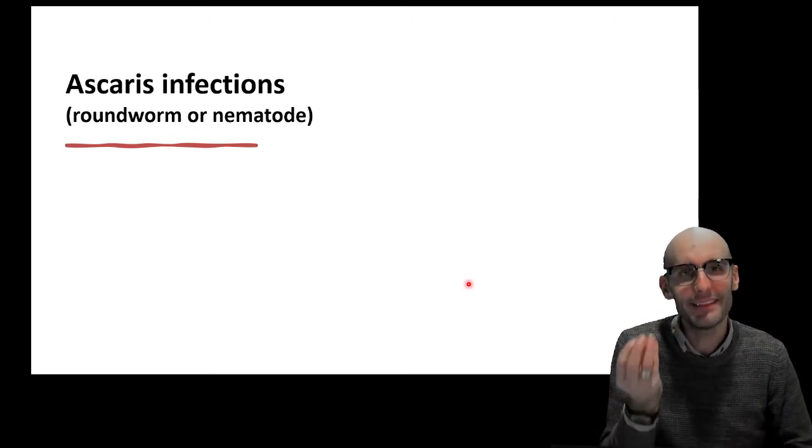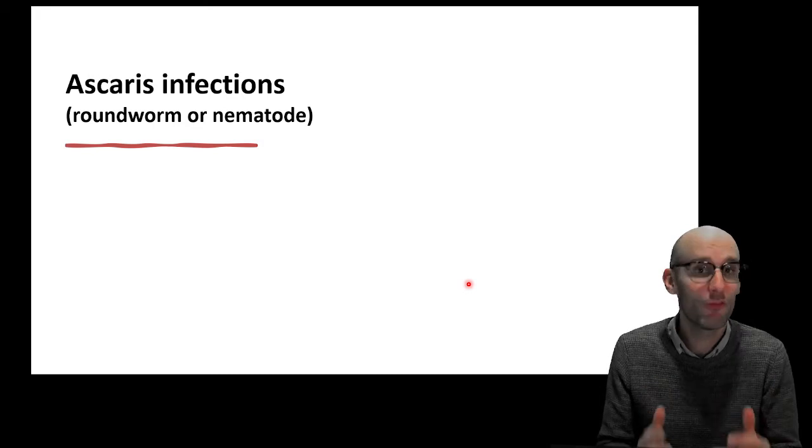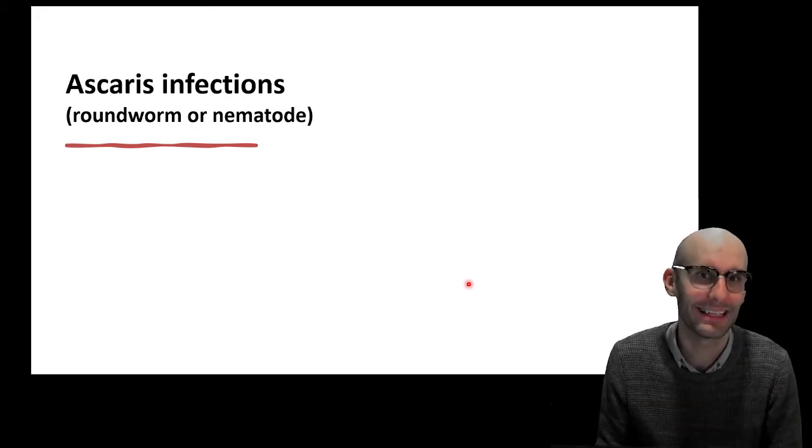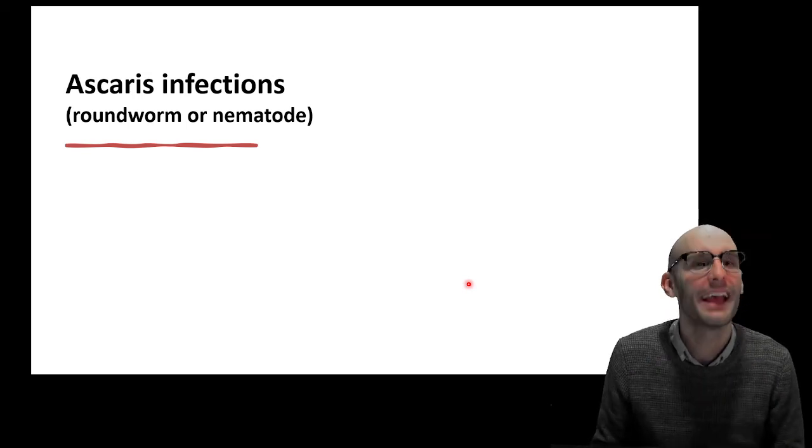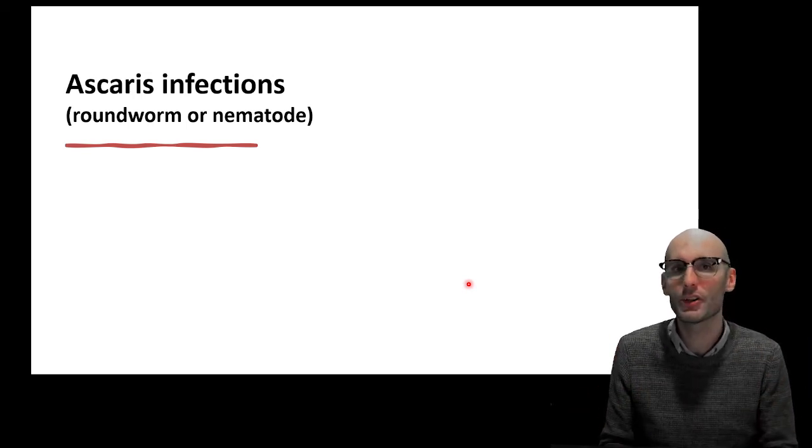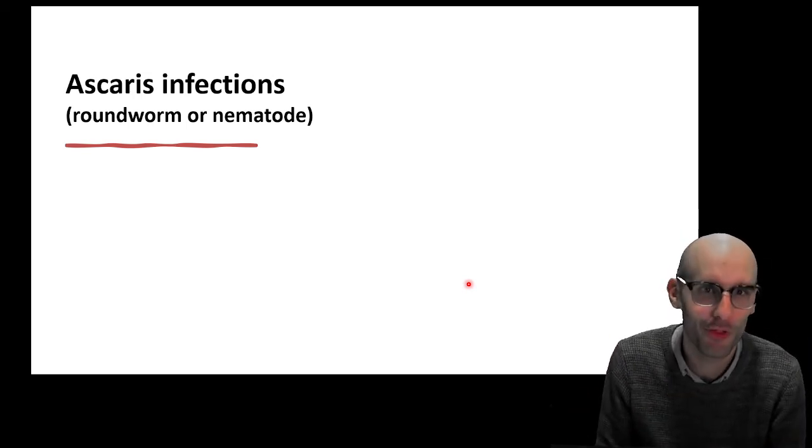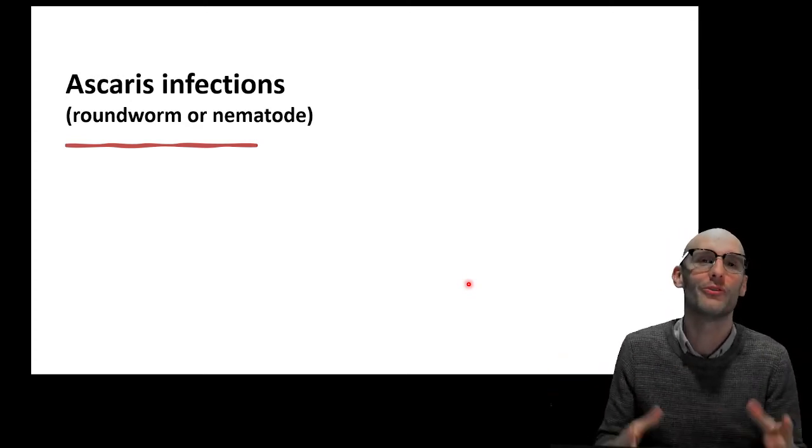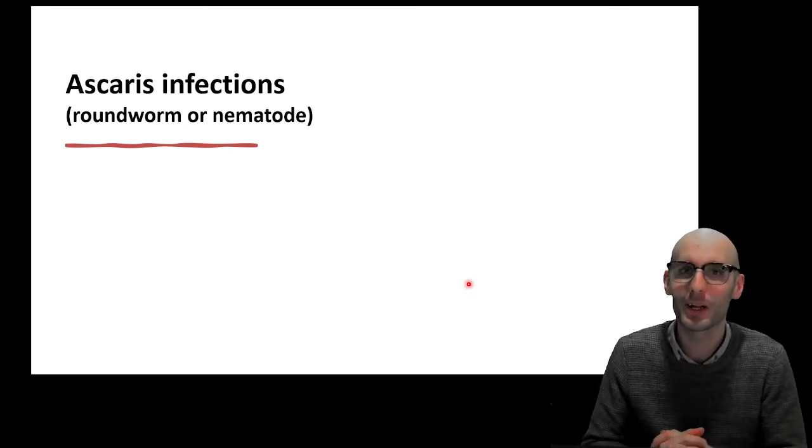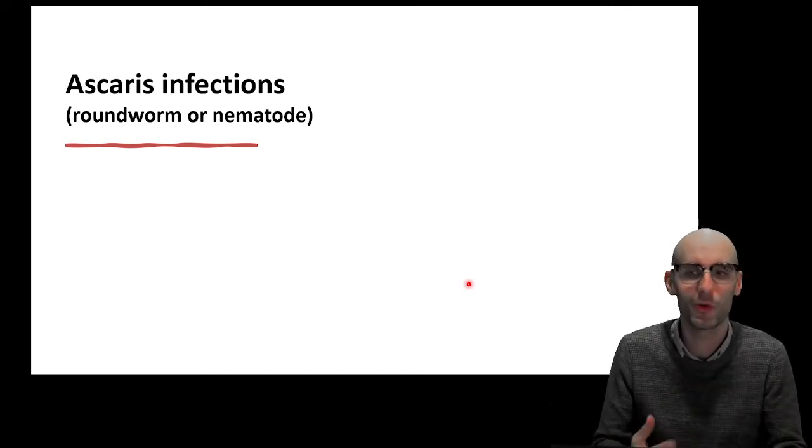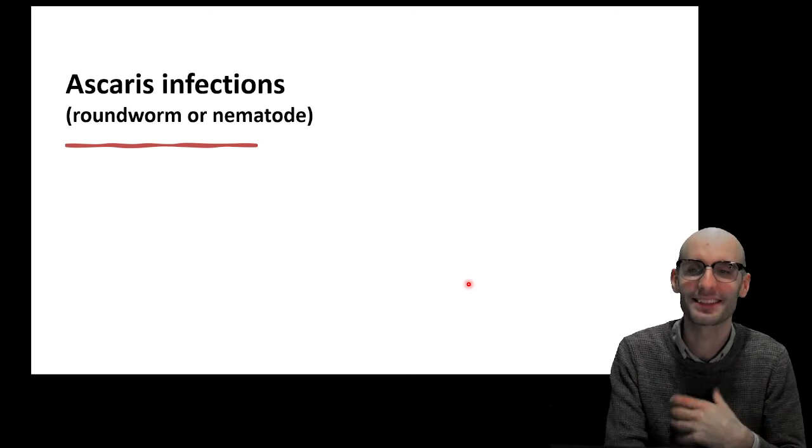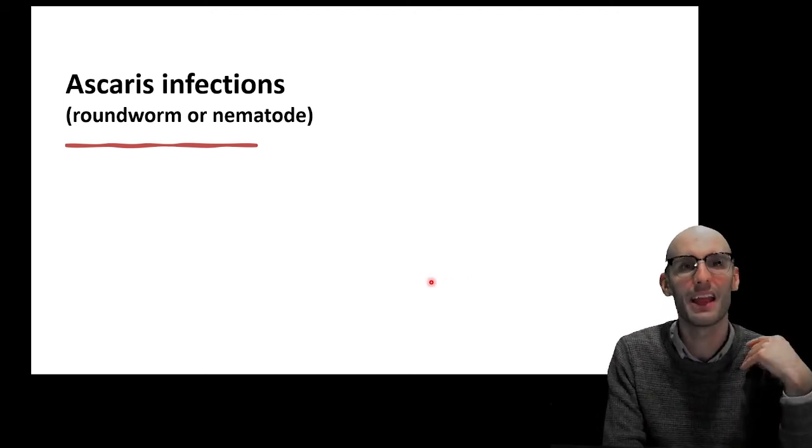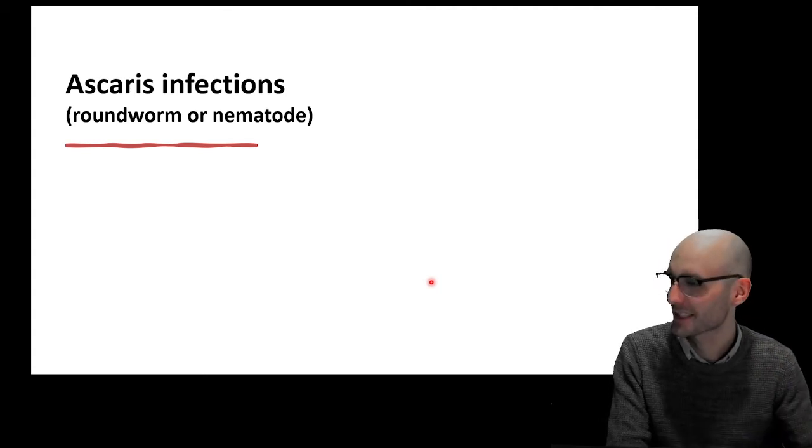These roundworm nematodes make up four-fifths of all animals on the planet, which is crazy. There are something like 50 billion nematodes for every human on the planet. Their species are crazy. It's no surprise some of them evolved to infect us. Most of them are just in the soil or in the water, but some of them do infect us and those are called Ascaris infections or helminths, which means infective worm, a parasitic worm.